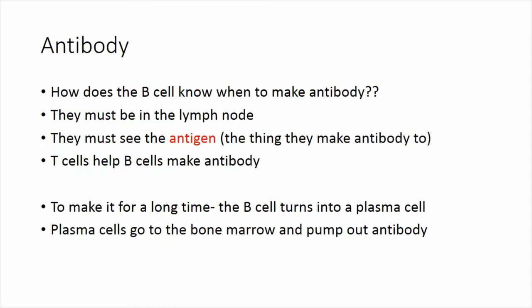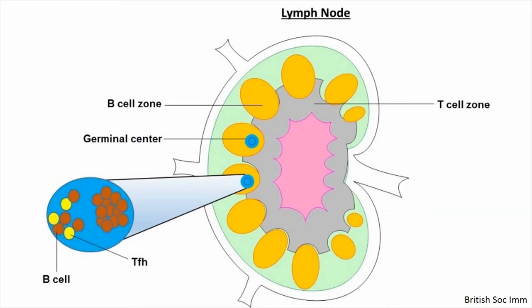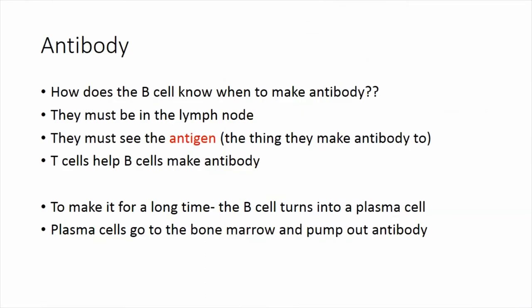How does the B cell know to make antibody? One key thing is it must be in a lymph node. Many of you have been told by your immunologist that your tonsils are quite small—or they can't see tonsils at all. Tonsils are a readily visible part of our immune system. For me as an immunologist, unusually small tonsils usually means the B cells aren't cranking on all cylinders, because a normally-sized tonsil would be populated by B cells. The B cell must see antigen—the antigen is just whatever the infection is.